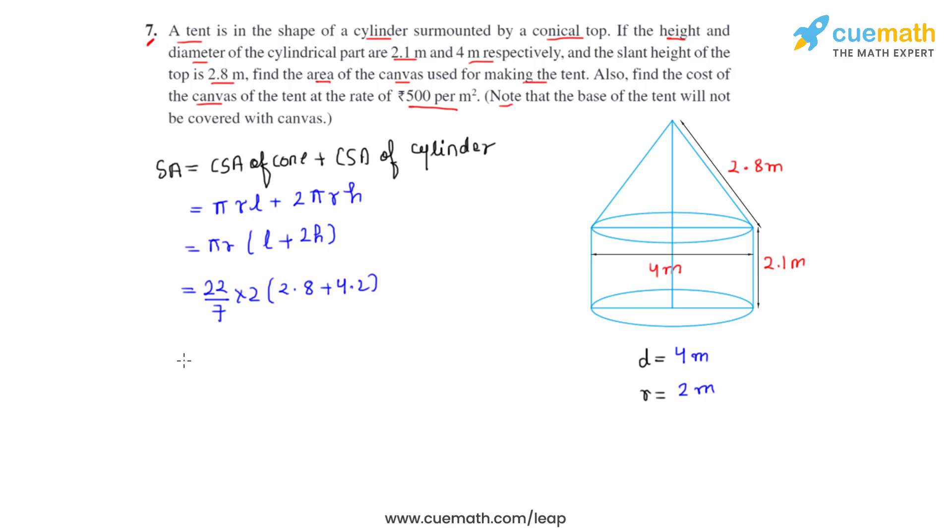So we can further calculate it as 44 by 7 times 2.8 plus 4.2 will give us 7. So 7 and 7 gets cancelled. We get the surface area of the tent to be equal to 44 meters squared. Now this is the answer for the first part.